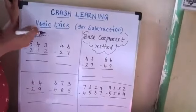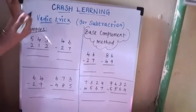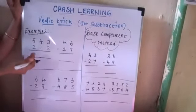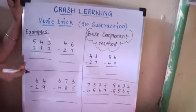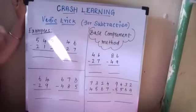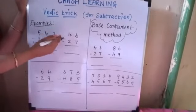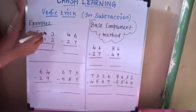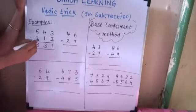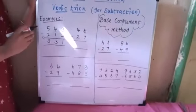Usually in subtraction, we go from right to left, and sometimes we need to borrow. For example, 543 minus 212 — we subtract from right to left: 3 minus 2 is 1, 4 minus 1 is 3, 5 minus 2 is 3. So the answer is 331. This is without borrowing.